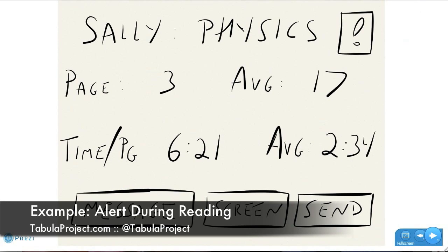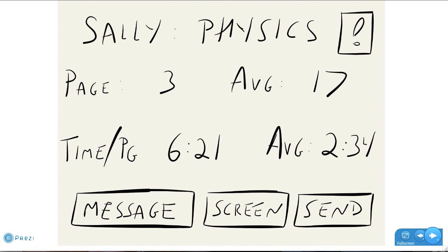Sally's on page 3, the class average is page 17. Sally is spending about 6 minutes and 21 seconds per page. The class average is right around 2 and a half minutes. So here's one of the ways that the technology can amplify good teaching practices. The teacher monitoring to see is an intervention needed. Is there a student, is there a group of students that need some extra attention while they're working independently? Or the teacher can go and work with a small group and then kind of keep a virtual eye to make sure that students are on task or to see when a student needs some extra attention.